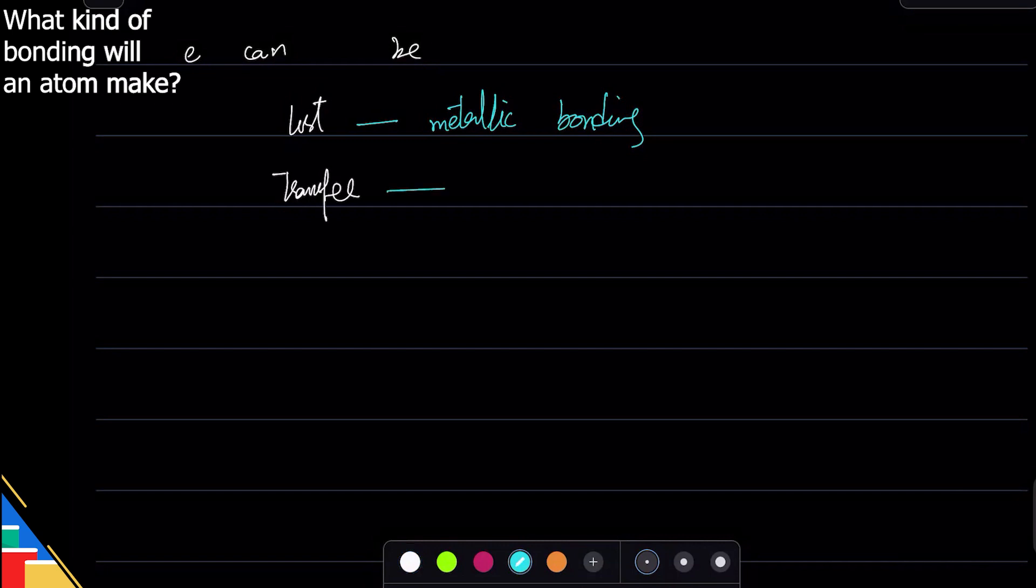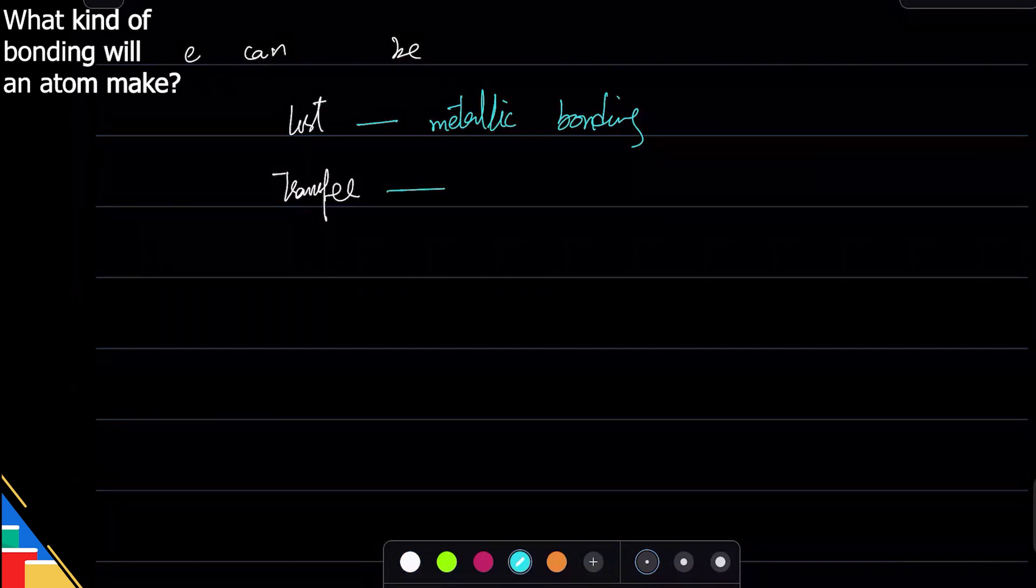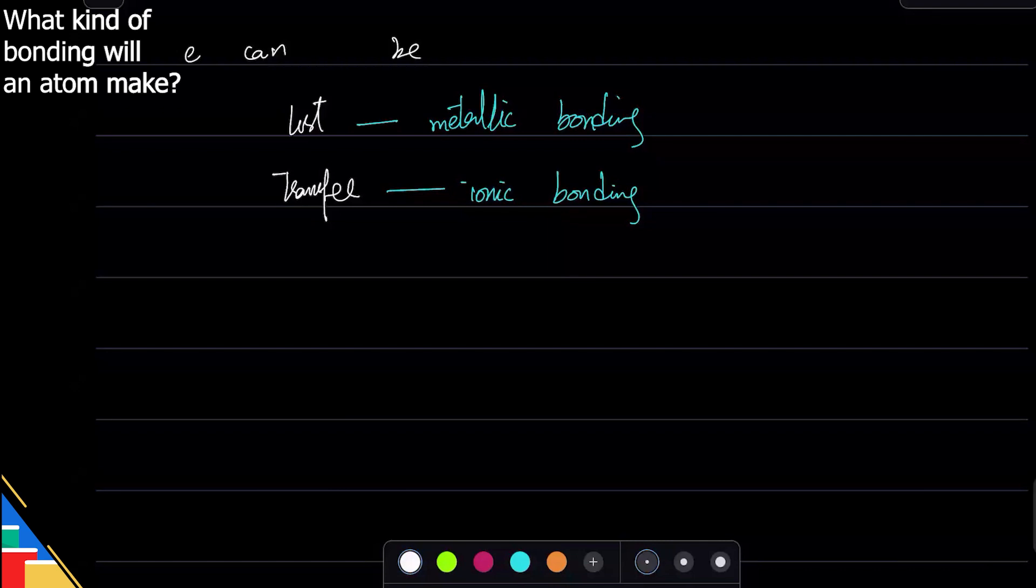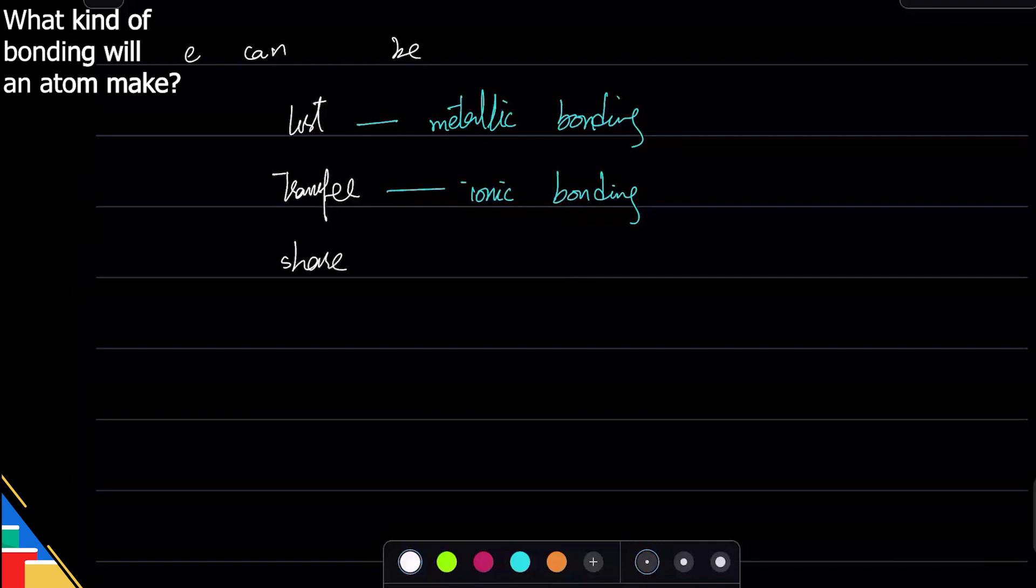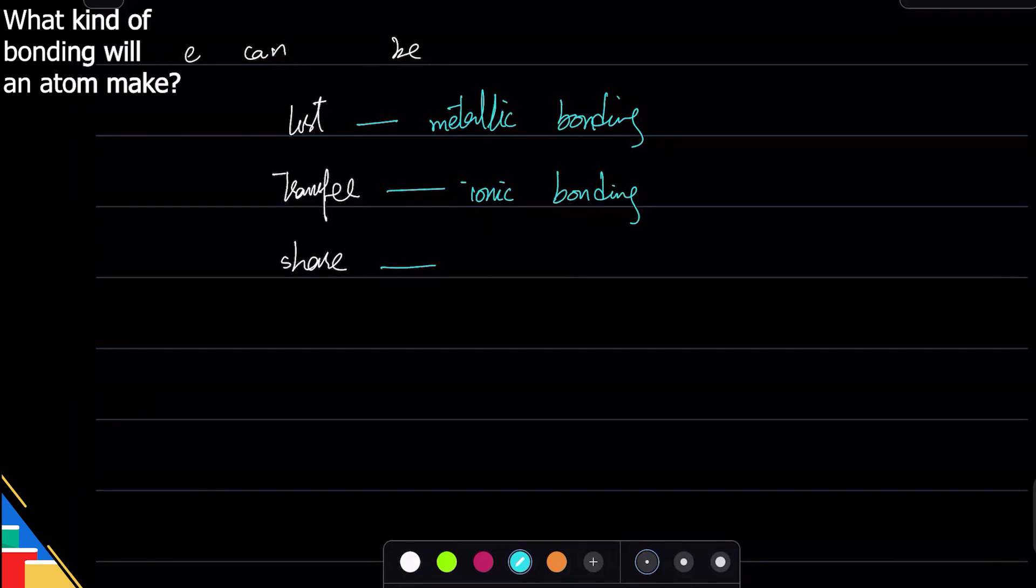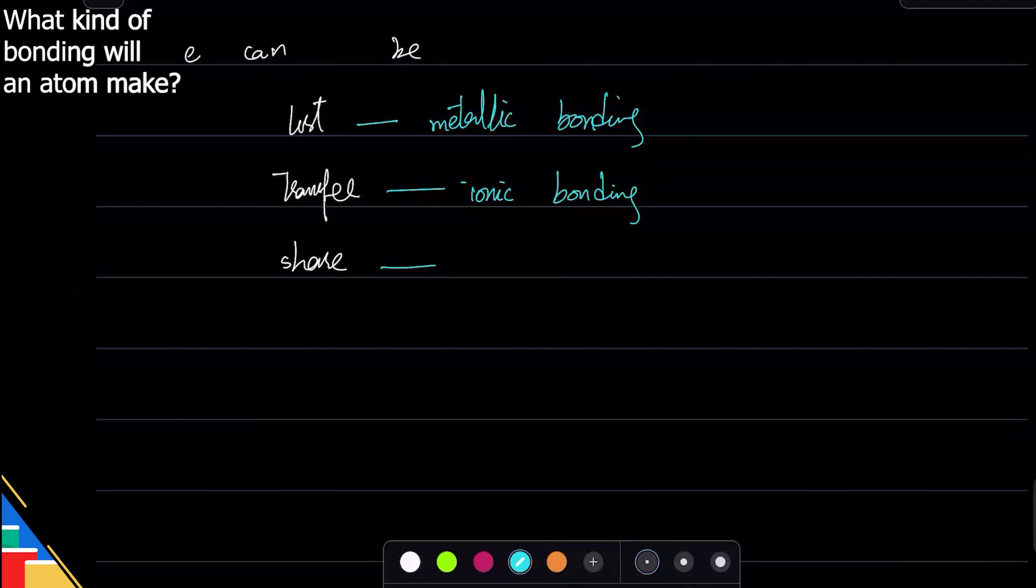There's a third option: that they don't transfer, they don't lose, they share electrons. This one is always done between non-metals most of the time, but there are some examples of metals doing it. Yes, transfer - ionic bonding - always involves transfer of electrons.